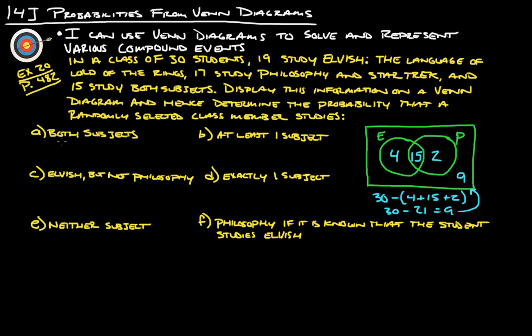The number of people that study both subjects, it tells us right here 15. But it's actually asking us to determine the probability, so that is 15 out of the total people which is 30, which gives us fifty percent probability. Probability you can leave as a percent or a decimal, doesn't matter.